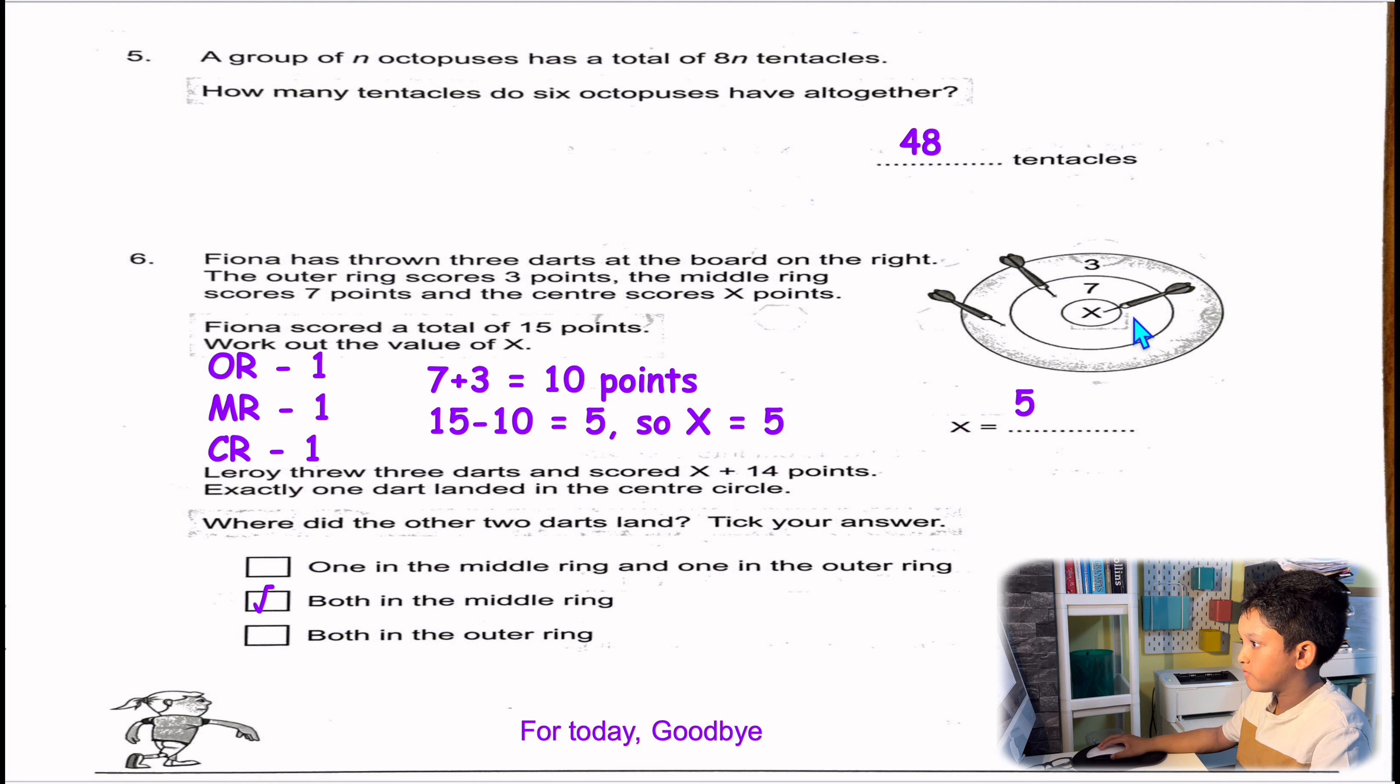Leroy threw 3 darts, then he got X, X is 5. So take away X, you've got 14 points left. So he threw 3, that X is 1. So now he has 2, which is 14. 14, he can make 2 sevens. So 14 could be split or divided in 7s, which will give us 2. And he had 2 darts left. So wait, let me switch that around. He's now got a 7, which is here. So both in the middle ring.